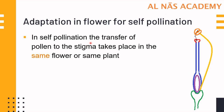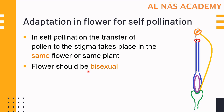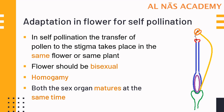In self-pollination, the transfer of pollen to stigma takes place in the same flower (autogamy) or same plant (geitonogamy). For autogamy, the flower must be bisexual so it can produce both anther and stigma. When the anther releases pollen it lands on the stigma of the same flower. The first adaptation is homogamy — maturation of both sex organs at the same time, meaning the egg and pollens are ready simultaneously.